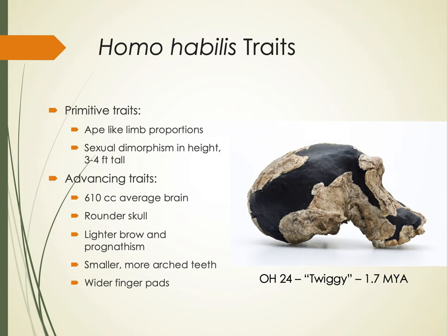Some Homo habilis traits: the primitive traits they retain from ancestors include ape-like limb proportions, meaning the arms were still relatively long. They were also very short, with sexual dimorphism — males were about four feet tall and females about three feet. The advancing traits include an increase in brain size, from about 440 cubic centimeters average in Australopithecines to about 610 cubic centimeters in Homo habilis — a 40% increase. The skull is more rounded, the brow ridge is much lighter, prognathism is reduced, and the teeth are smaller with a more parabolic arch.